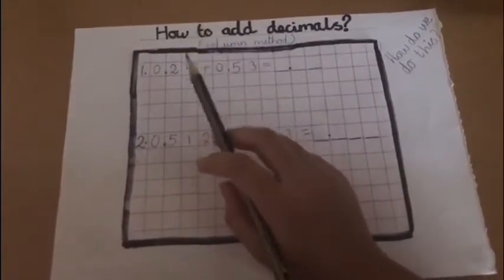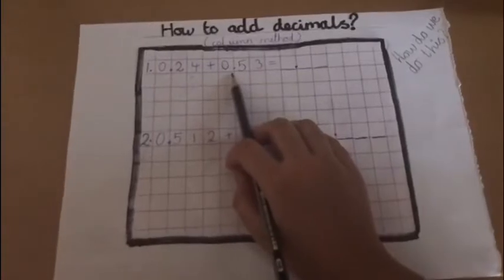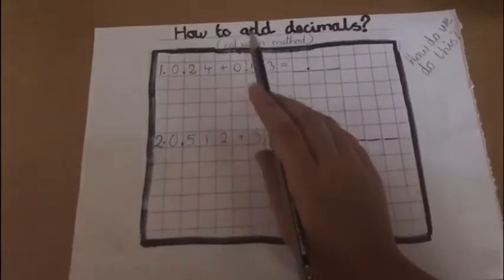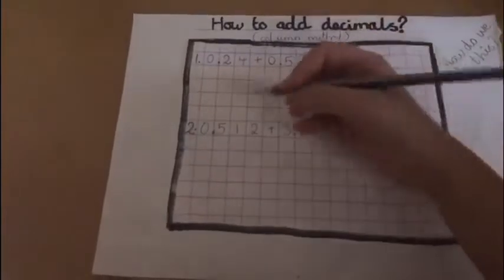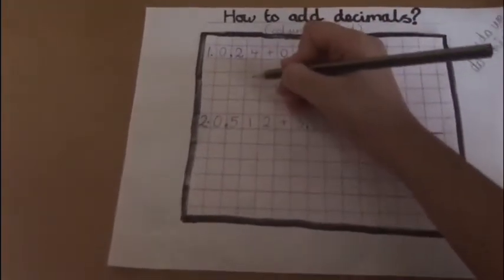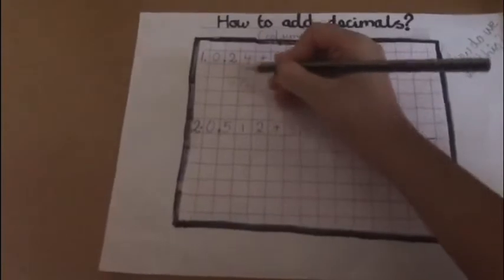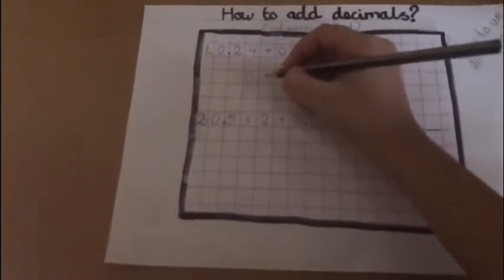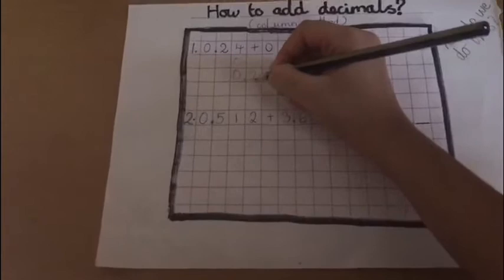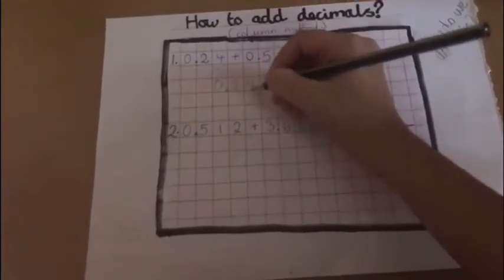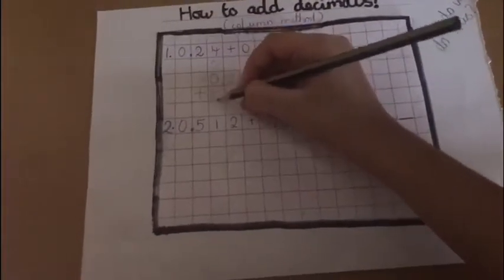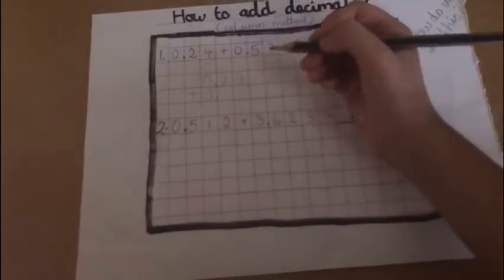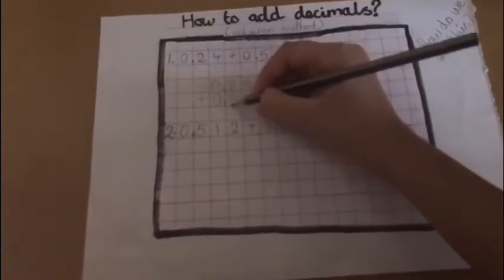The first thing you need to do to add both decimals is set them up. So how exactly do we do that? Like this: 0.24 plus 0.53.